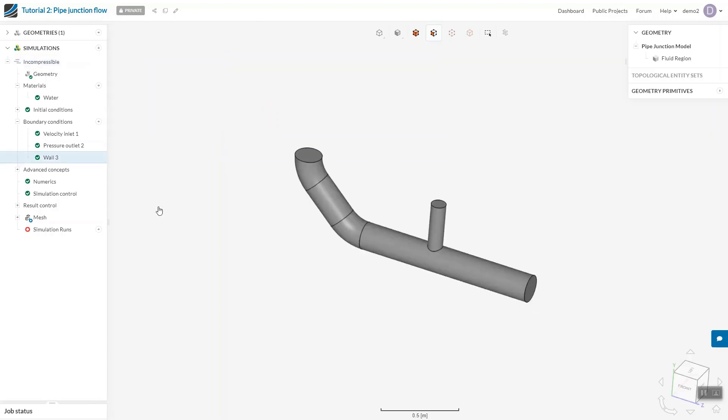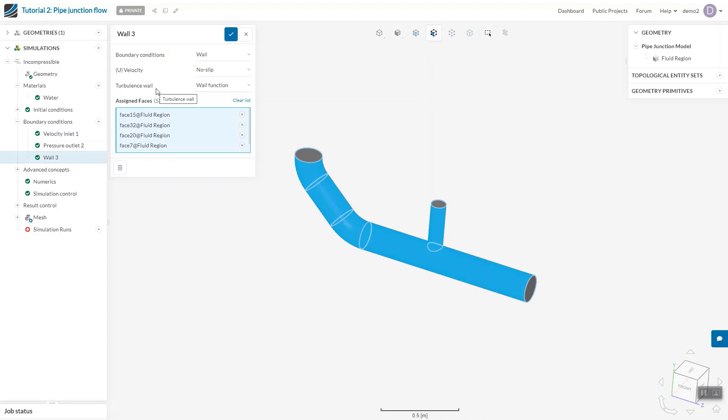The other question to contend with when dealing with turbulence is how to handle turbulence at the wall. In order to demonstrate this, I've created a quick wall boundary condition, which you can see more about in our boundary conditions tutorial. And you'll see here I have a turbulence wall field. We have two options, you can either select wall function or full resolution. Wall function is typically less accurate, but has less stringent mesh requirements, and will typically be a lighter weight simulation. This is our default.